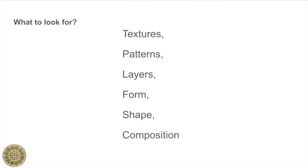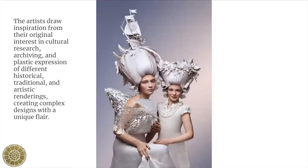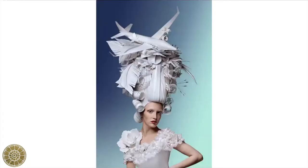I'm going to show you some pictures, and what I want you to look at is how the artist uses different things — texture, patterns, layers, form, shape, and composition. This is Issa Kazina. Her paper sculptures are completely made from cut and folded paper. Essentially all you need is paper and a pair of scissors to make magnificent designs like these. She gets her inspiration from old archival material and fashion museums, creating her own creative flair, and I just think they're magnificent.